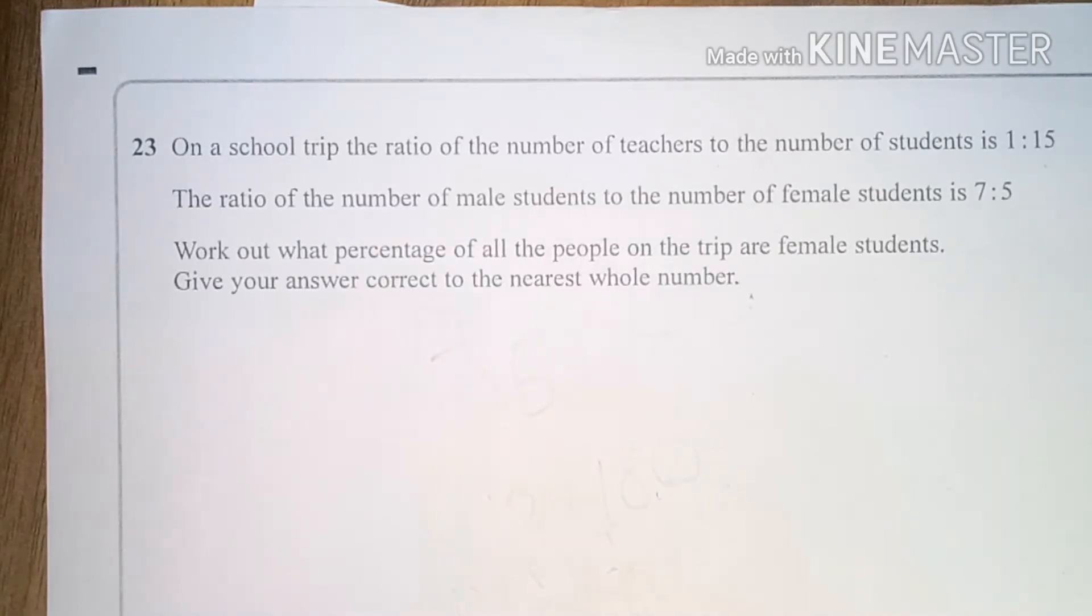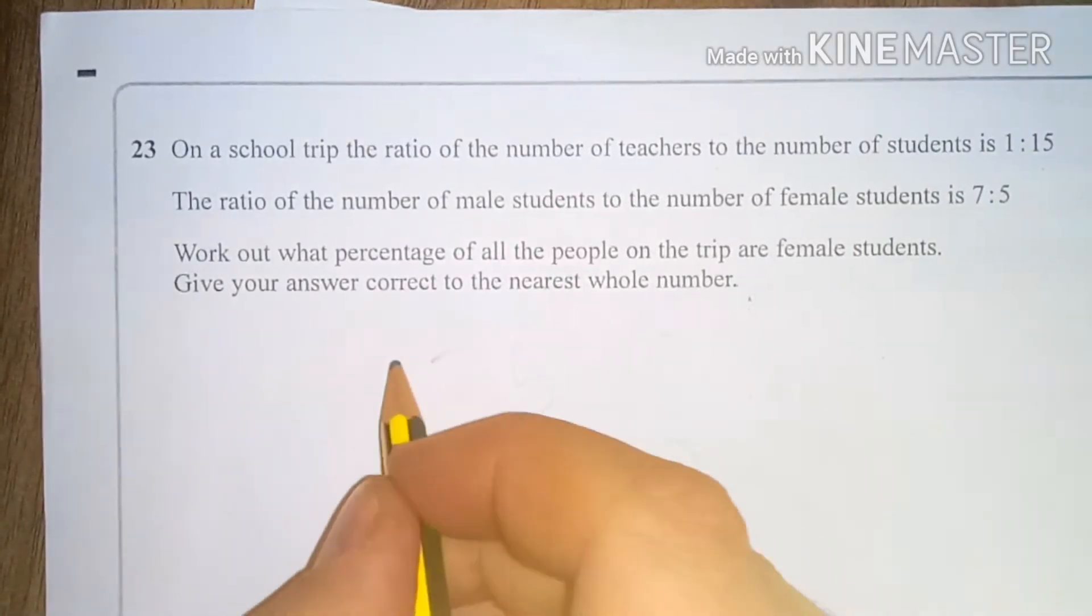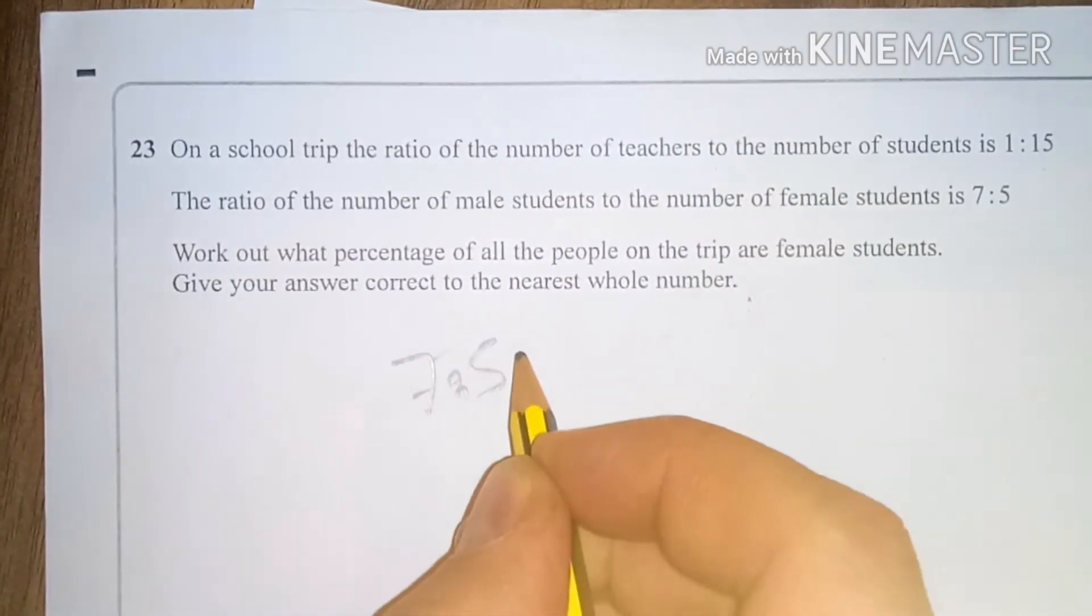do something with the ratios and then change them into percentages. Now it would help me out massively if I can make them into one big ratio, and this one will do. My 7 to 5, and